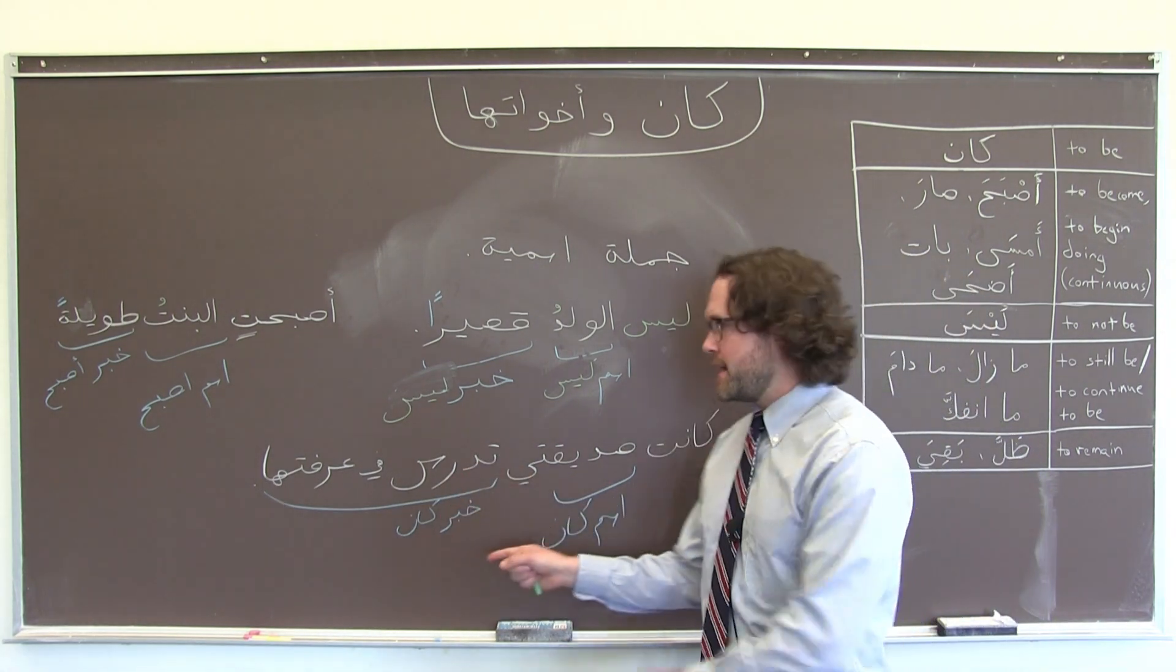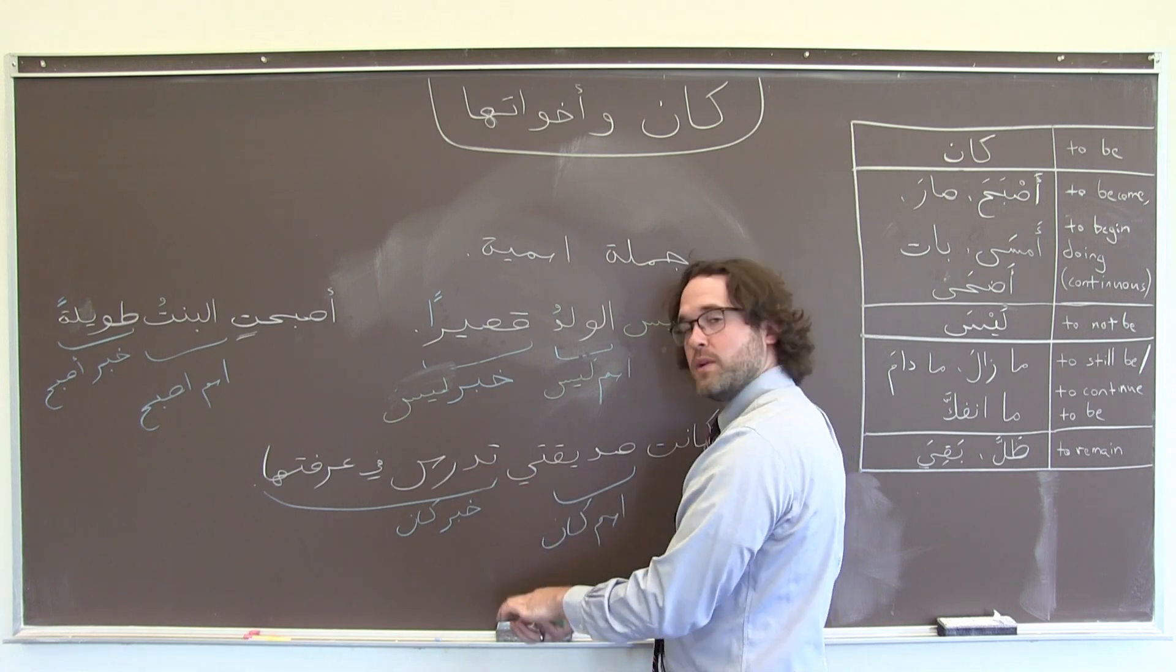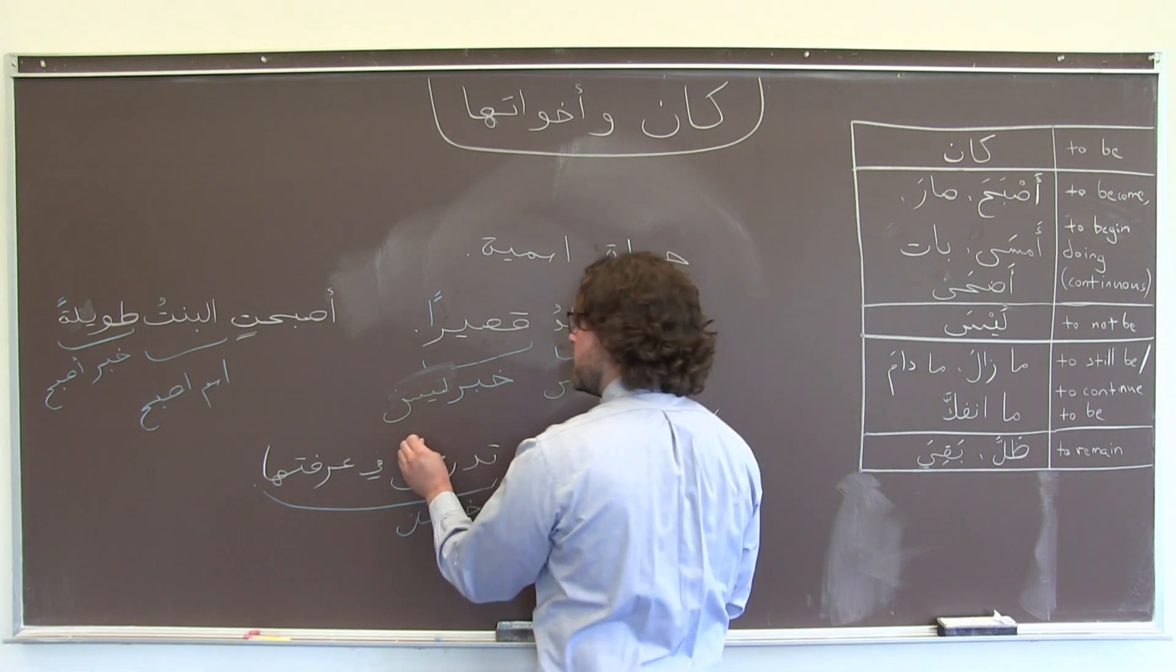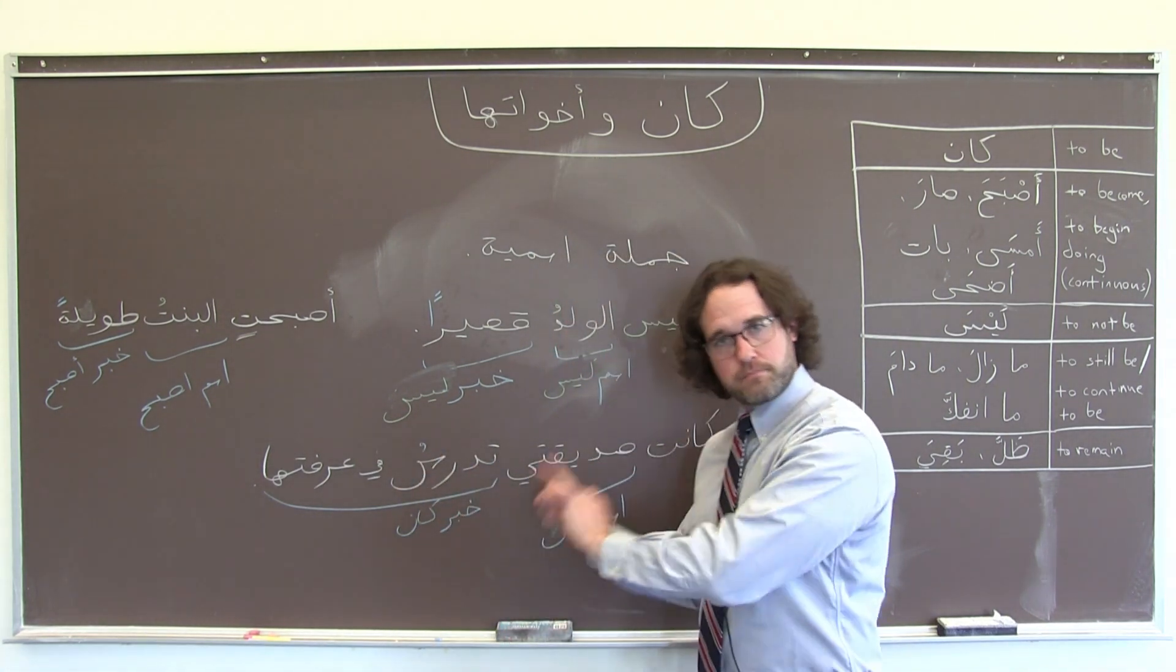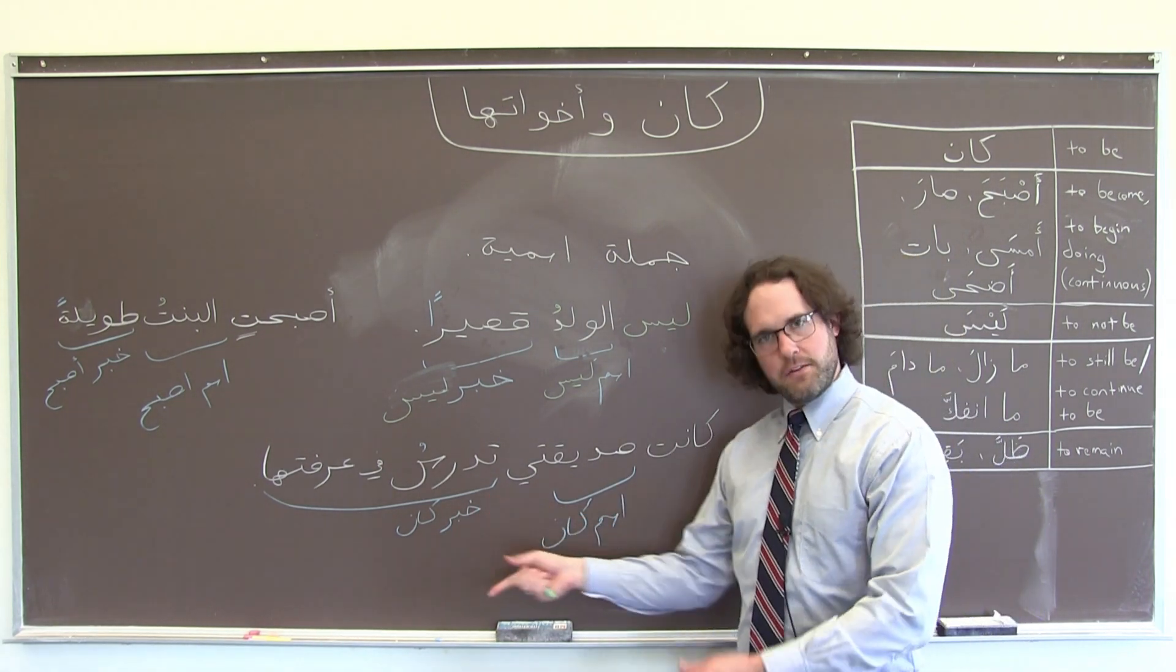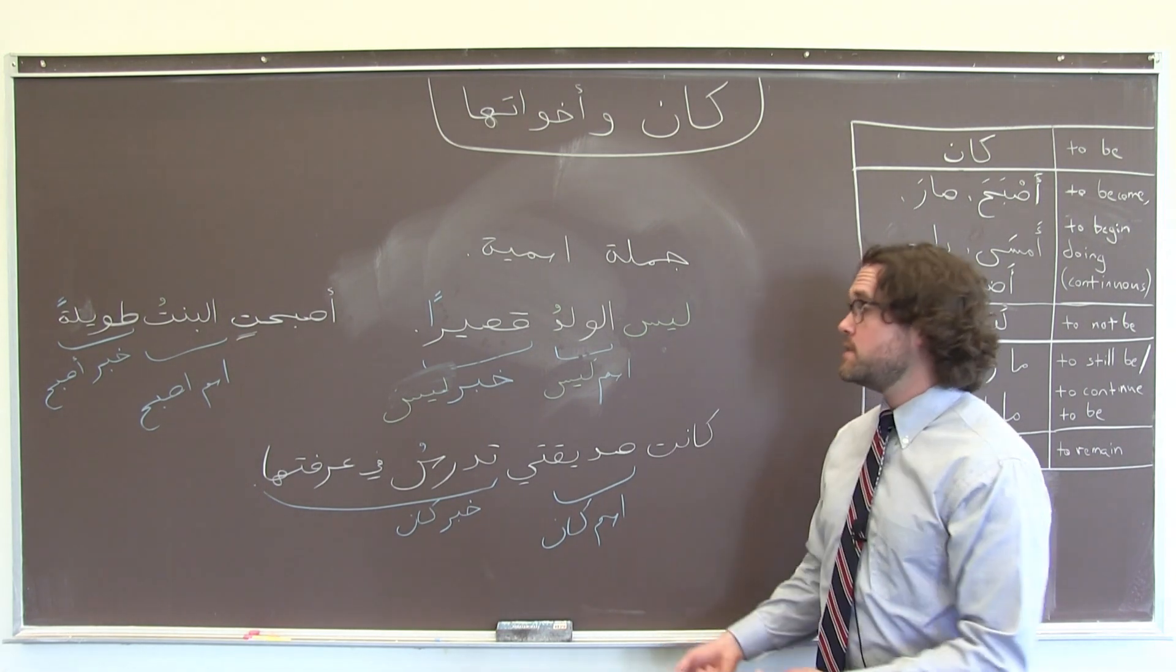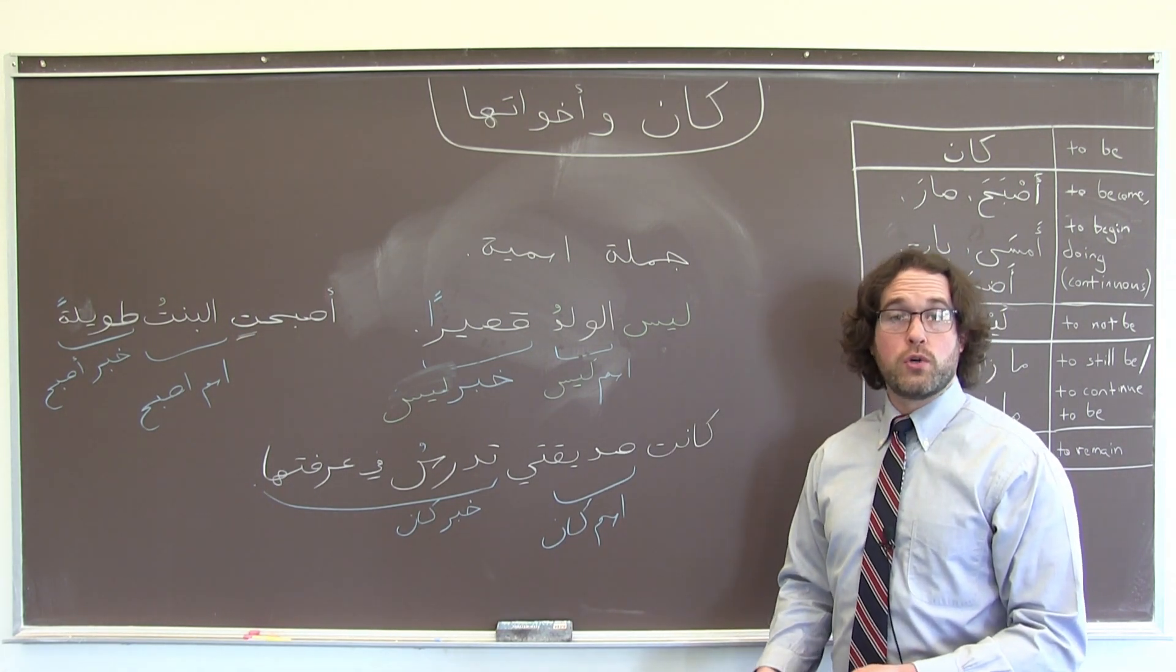So I don't need a noun there, and I don't have to worry about the إعراب, these case endings, because I have a verb, and it's going to take its own case ending in formal Arabic that has its own rules. But this would mean, my friend was studying, kind of a past continuous sense. My friend was studying in her room.